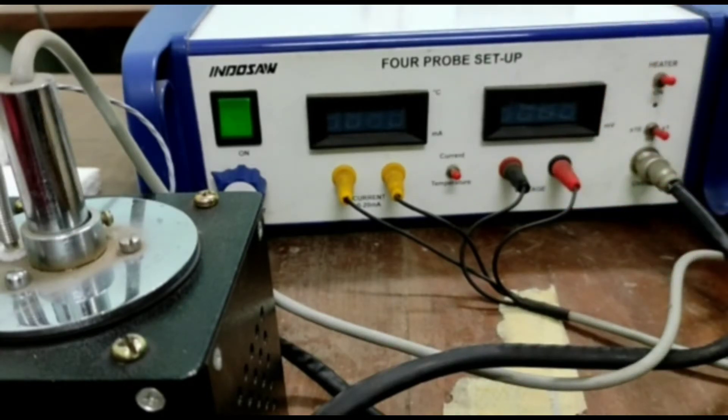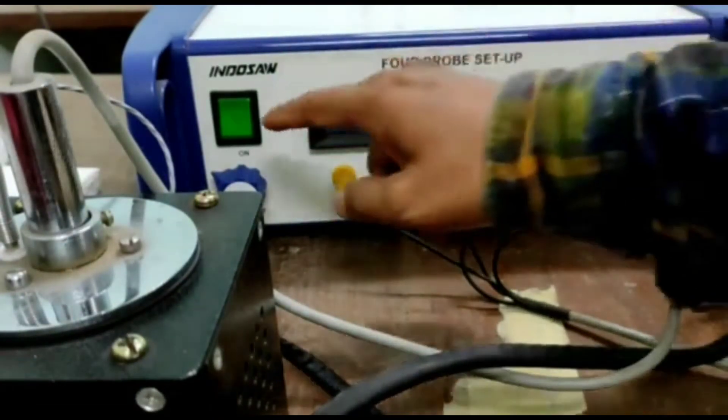Make the circuit as shown here. Put the sample inside the oven, it is already given. Now I put the power on.